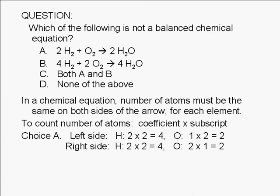There is no coefficient written for O2. This means that the coefficient of O2 is 1. A coefficient that is not written is implied to be 1. The subscript of oxygen in O2 is 2. Therefore, the number of oxygen atoms on the left-hand side is 1 times 2, or 2.